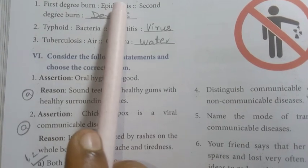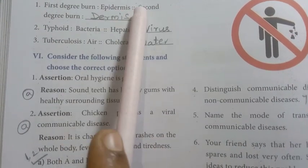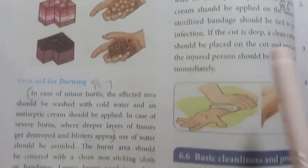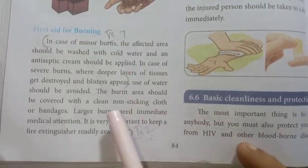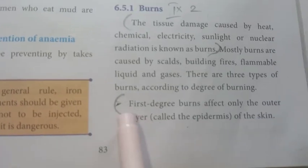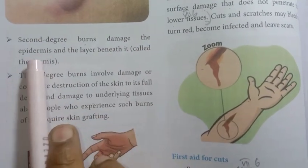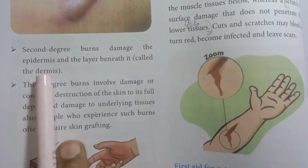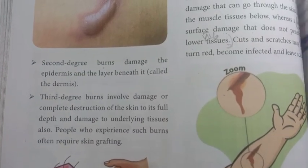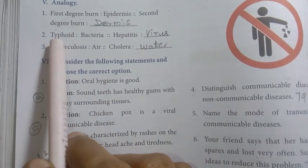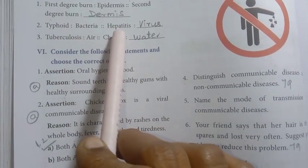First degree burn — the burnt area affects the outer layer called the epidermis. Second degree burn — damages the layer beneath it, called the dermis.